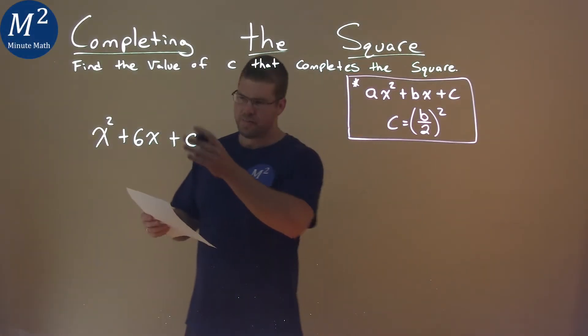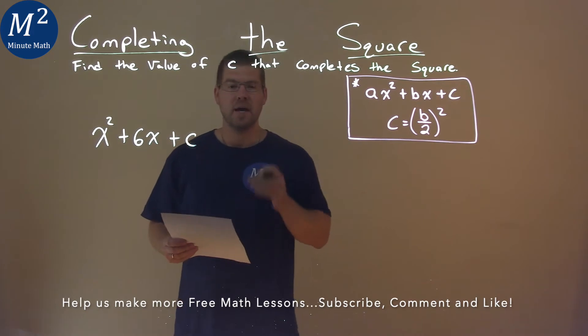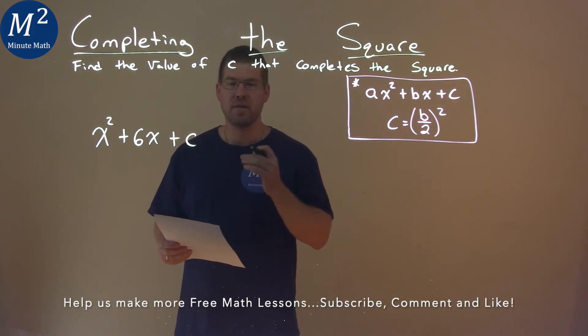We're given this problem right here, x squared plus 6x plus c, and we need to find the value of c that completes the square.